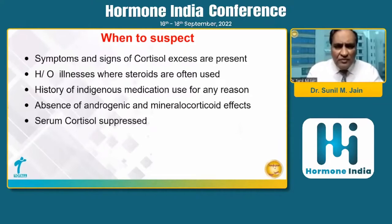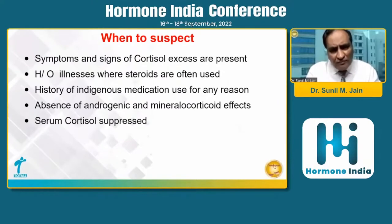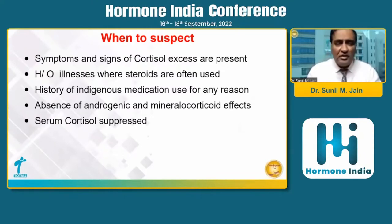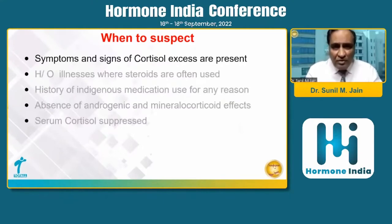These are the standard features of Cushing's syndrome. An important point in iatrogenic Cushing's is that this syndrome develops because of external or exogenous steroid intake. Therefore, there is absence of androgenic and mineralocorticoid effects, which we very often see in endogenous Cushing's syndrome. In Cushing's syndrome cortisol is high, but here it will be the opposite — cortisol will be suppressed. So somebody who looks like Cushing's but has low cortisol levels means we are dealing with iatrogenic Cushing's.